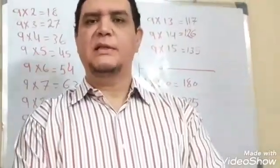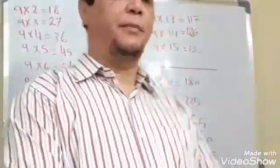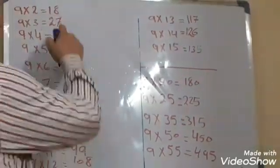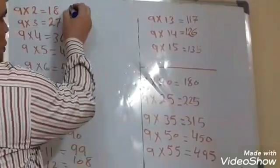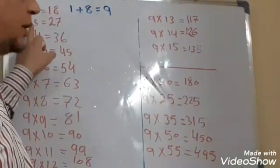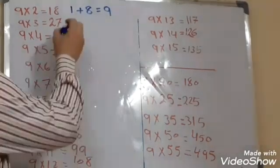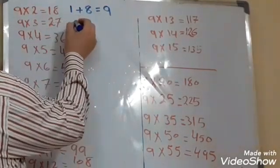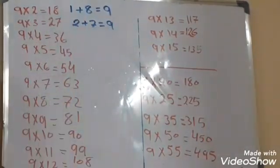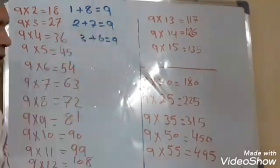The third secret of the number nine involves the multiplication table. Nine times two equals 18 — if we add digits of 18: 1 plus 8 equals nine. Nine times three equals 27 — if we add: 2 plus 7 equals also nine. Nine times four equals 36 — if we add: 3 plus 6 equals also nine.